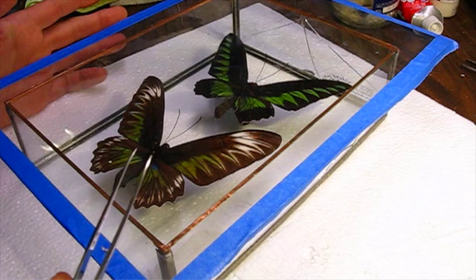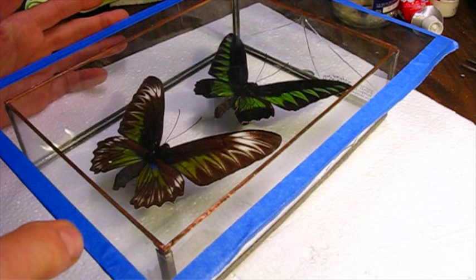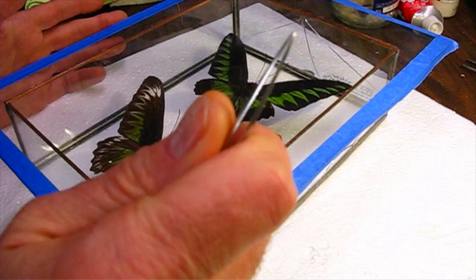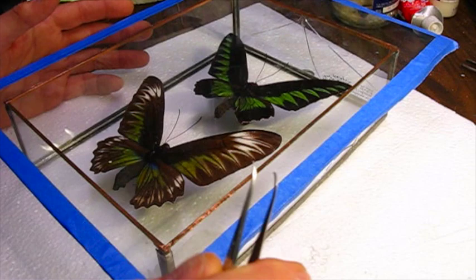It's always possible little insects can get in there. Dermestid beetles are the worst. Also these little bugs called Sosids which are really tiny and they can get into the tiniest little crack and they'll just eat up everything, just destroy the collection.